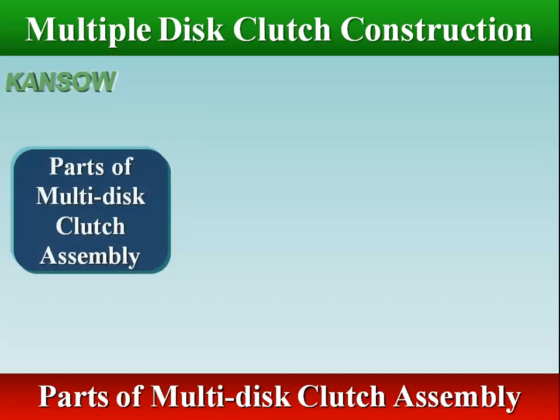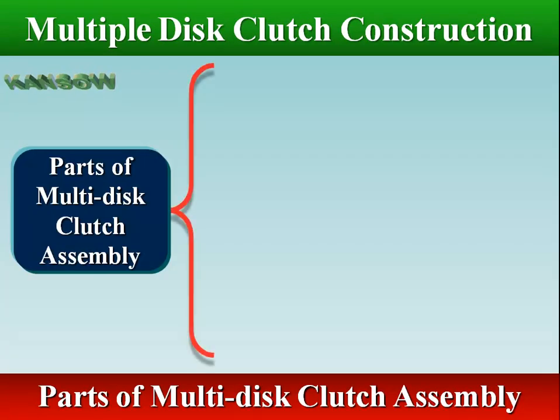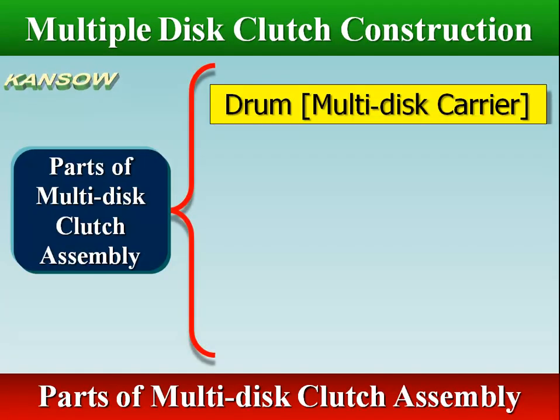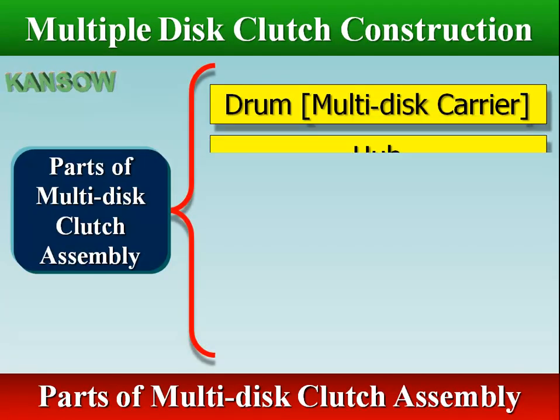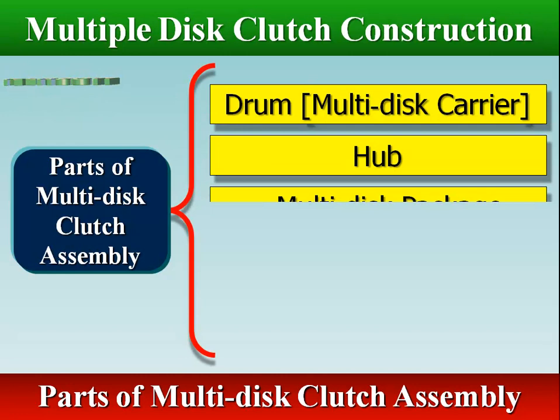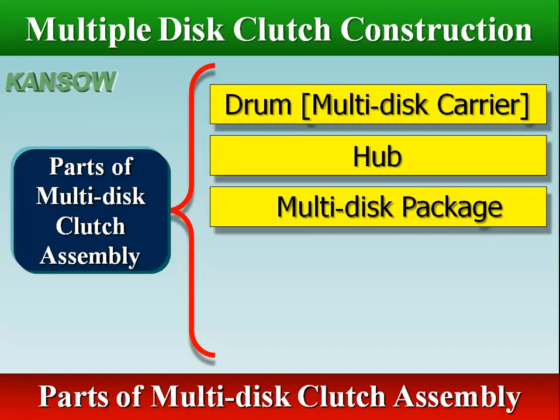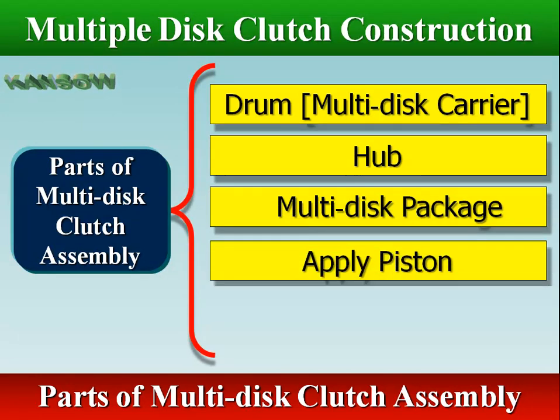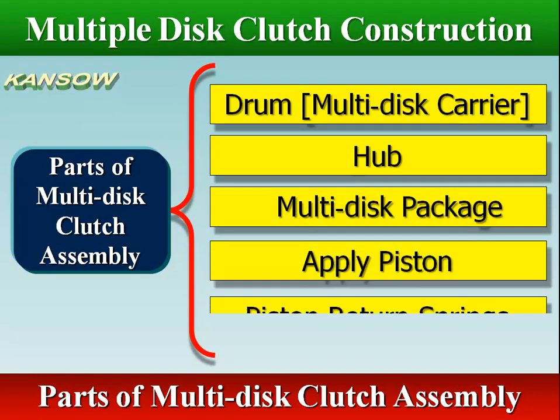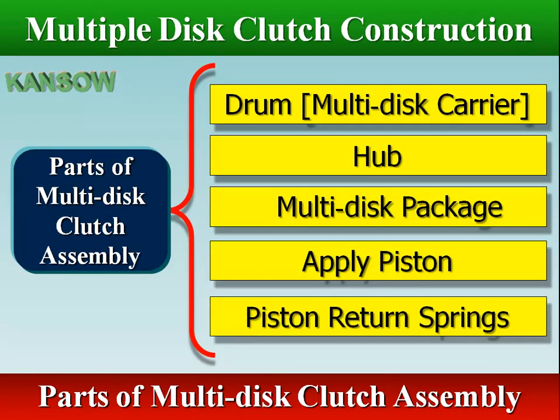The parts of a multi-disc clutch assembly are: drum, hub, multi-disc package, apply piston, and piston return springs.